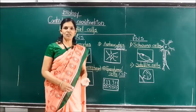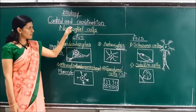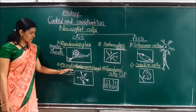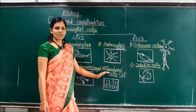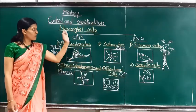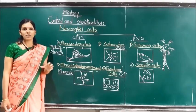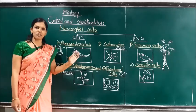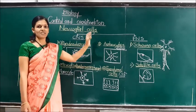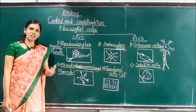In today's lecture we have seen the structure of neuroglial cells present in both the CNS and PNS. In the CNS we have covered oligodendrocytes, microglia, astrocytes, and ependymal cells, while in the PNS, Schwann cells and satellite cells are present. Neuroglial cells help in protection of nerve fibers, give support to the nervous system, help in formation of myelin sheath, and help in formation of cerebrospinal fluid. In the next lecture we will see the structure of the synapse and the transmission of nerve impulse through the synapse.